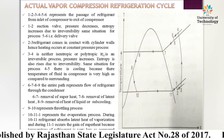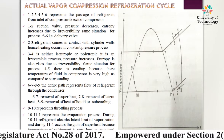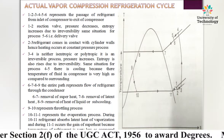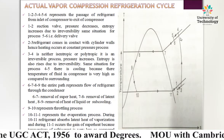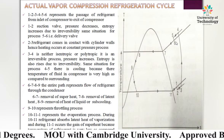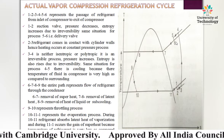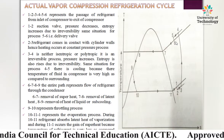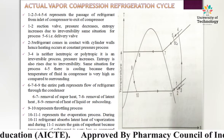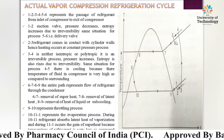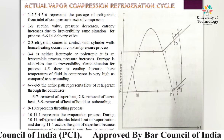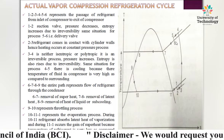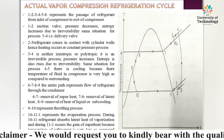Points 1, 2, 3, 4, 5, 6 represent the passage of refrigerant from the inlet of the compressor to the exit of the compressor. At the inlet of the compressor there is a suction valve, and at the exit there is a delivery valve. Process 1→2 occurs across the suction valve.